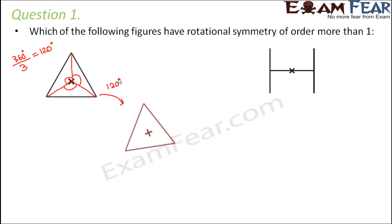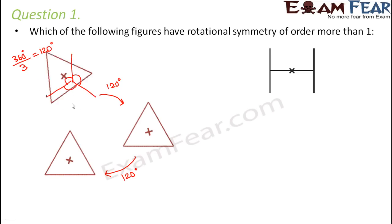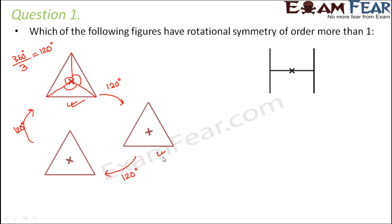When you rotate by 120 degrees, you come to a new position. Rotate further by 120 degrees, it comes to another position. And when you further rotate by 120 degrees, it comes back to the original position. So basically in one complete rotation, how many identical triangles do you get? You actually get three identical triangles — one, two, three. Therefore, the order of symmetry for this triangle is three.